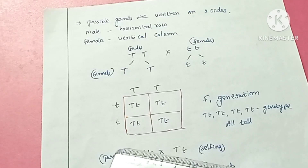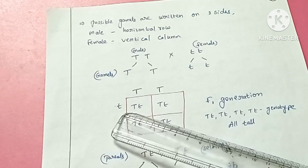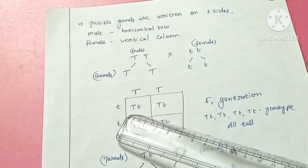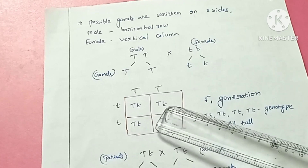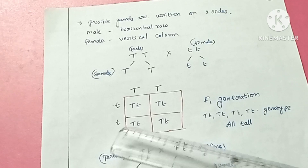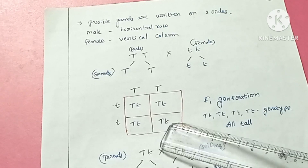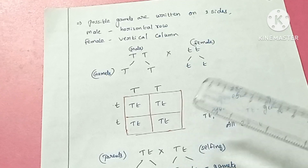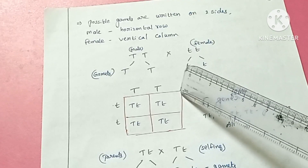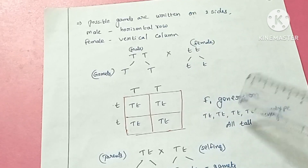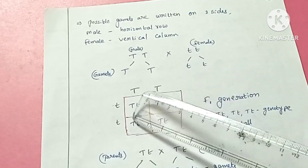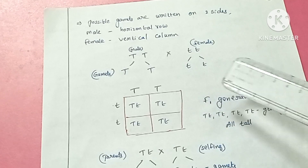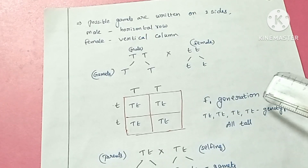Using the Punnett square we can observe the possible genotypes that form. Capital T fused with small t results in capital T small t, and capital T fused with small t again results in capital T small t — heterozygous conditions. In F1 generation, from the male tall plant and female dwarf plant, we get all heterozygous tall plants.